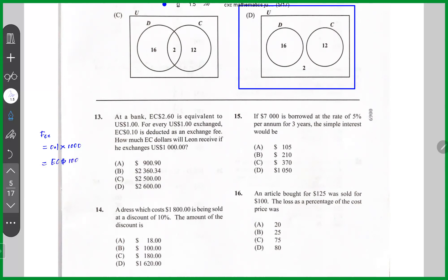Now let's do the exchange. We have US one dollar is equal to EC $2.60. So US $1,000, this is X. So X is equal to a thousand times two. This is EC $2,600 minus the fee, which is 100. So Leon would receive EC $2,500. So the answer here would be C.